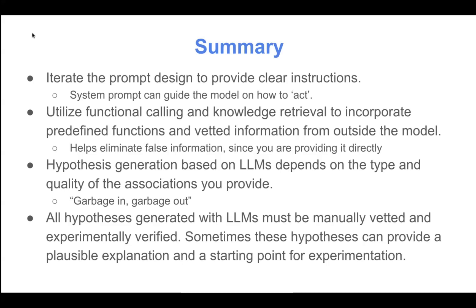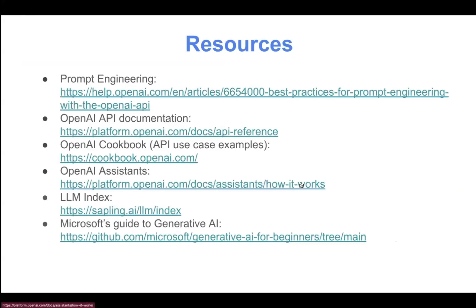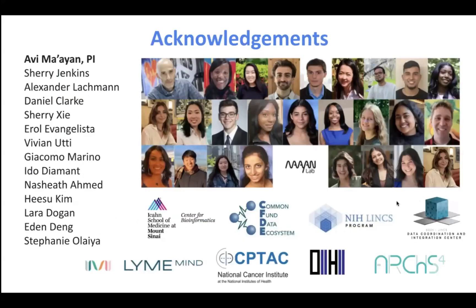Keep in mind that all these hypotheses have to be manually vetted and experimentally verified — there's certainly still opportunity for the model to be incorrect. But the real goal is to provide a starting point and a plausible explanation for why those gene sets might connect. Here are some helpful resources — links I've put on previous slides and a couple extras I'd recommend if you're curious and exploring more. Finally, I'd like to acknowledge the Ma'ayan Lab and all the people who helped put together these applications, and Dr. Ma'ayan for his guidance and ideas in creating all of this. Thank you.